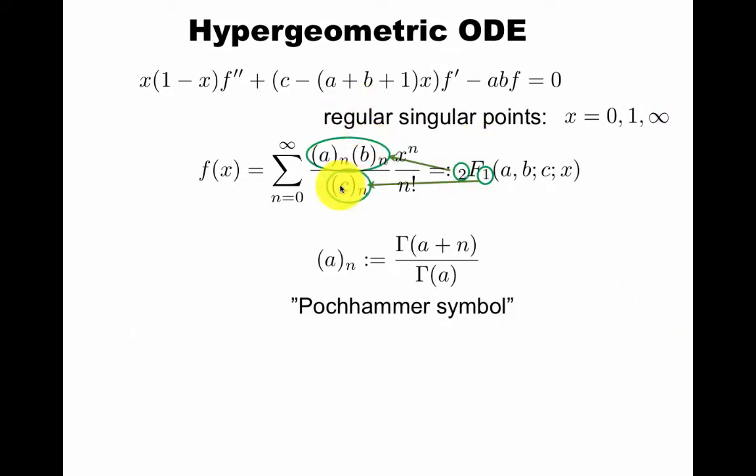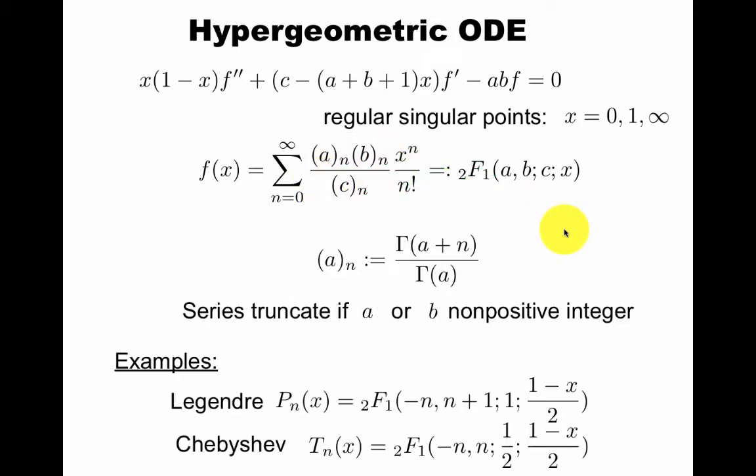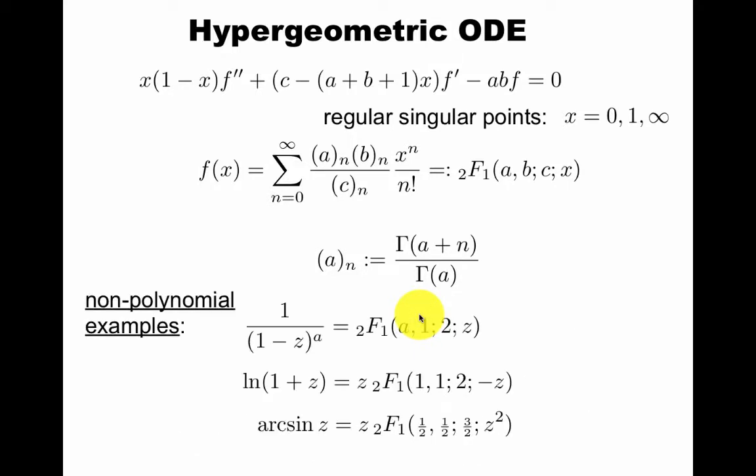First of all, the two and one mean two upstairs and one downstairs, so the generalizations have more of these upstairs and more downstairs. The series truncates if a or b are non-positive integers. For example, the Gegenbauer polynomials arise as 2F1 like this, and Chebyshev polynomials arise like this.